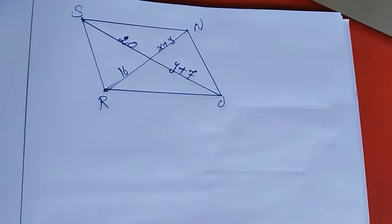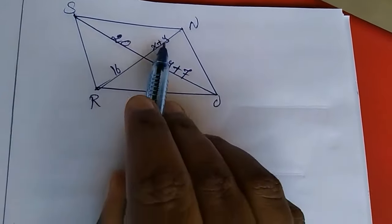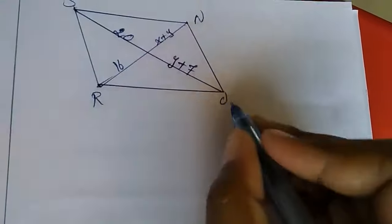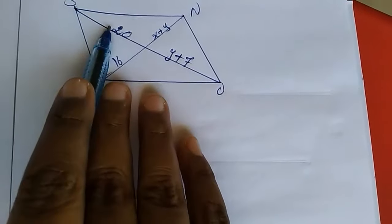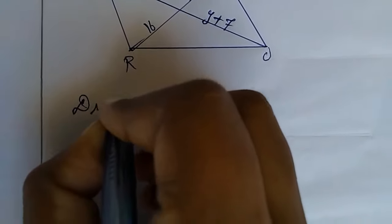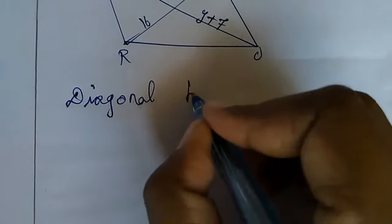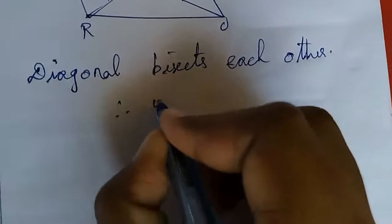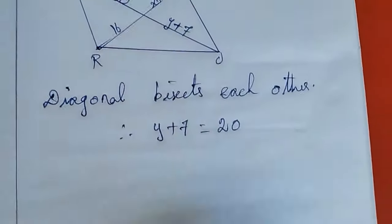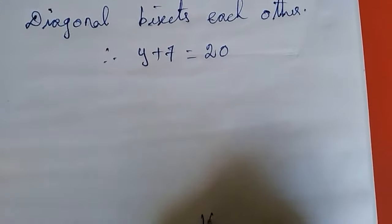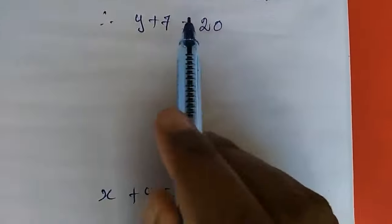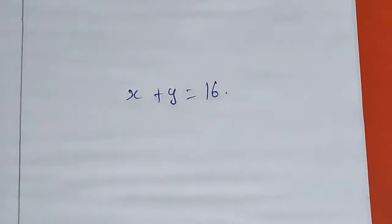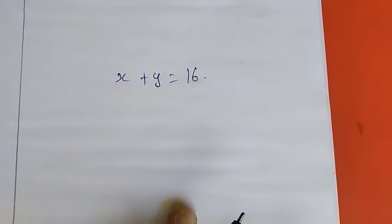Now moving to the second sub-part of problem 8. Here also you need to find x and y. The diagonal bisects each other, so opposite halves are equal. Therefore y plus 7 equals 20, and x plus y equals 16. Solve the first equation to get y, then substitute into the second to get x. This is homework for you.